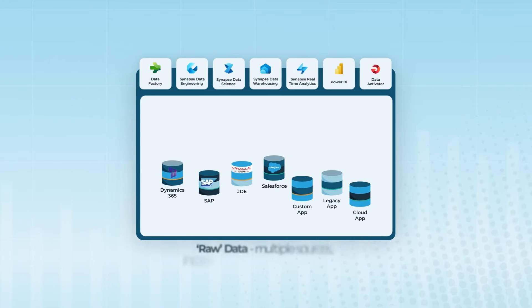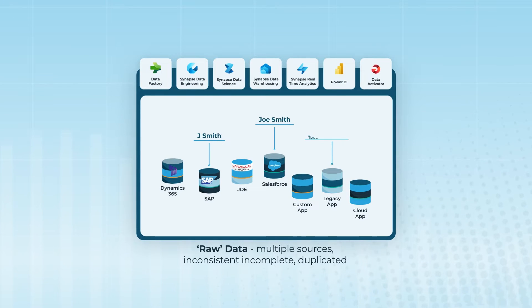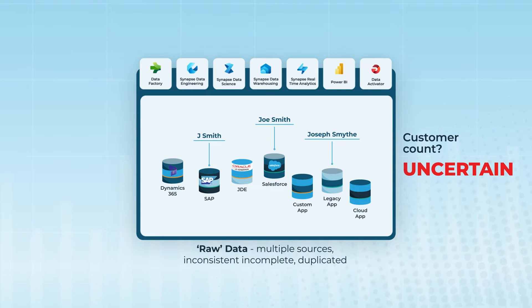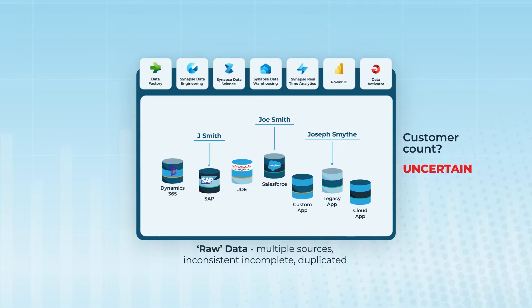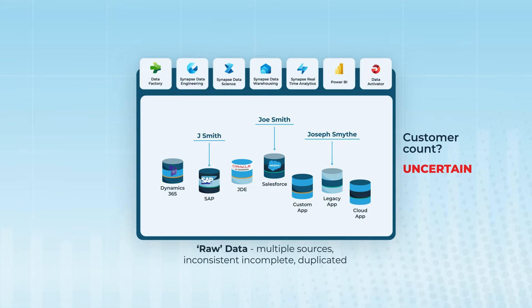Let's take an example. In different systems, you have Jay Smith, Joe Smith, and Joseph Smythe. Is that three customers? Or two? Or maybe just one? If you don't know, and your AI doesn't know, then you are already at risk and you may not even know it.